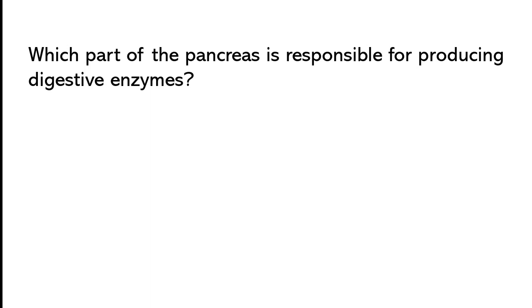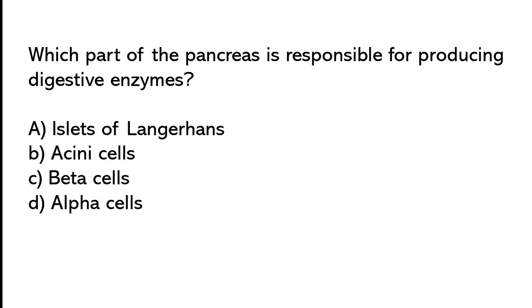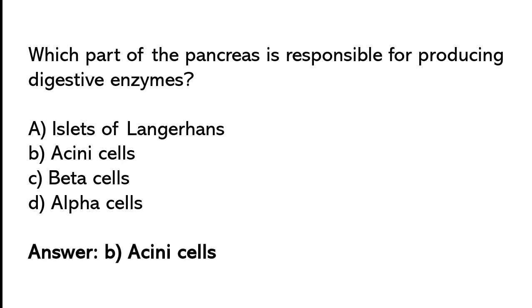Which part of the pancreas is responsible for producing digestive enzymes? Islets of Langerhans, acinar cells, beta cells, or alpha cells. The correct answer is option B — acinar cells.